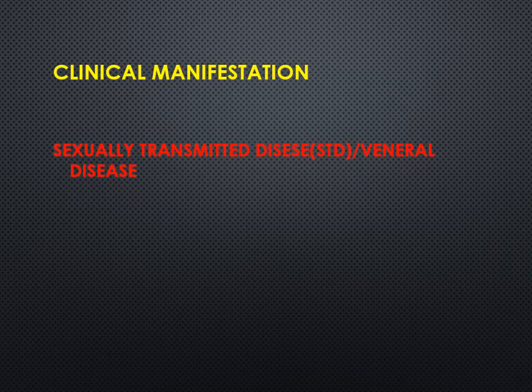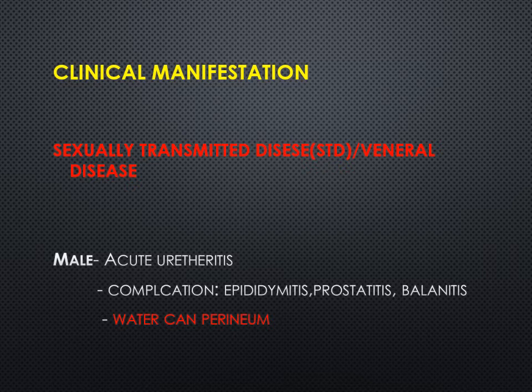Regarding clinical features in males: the most common presentation is acute urethritis with urethral discharge. The word 'gonorrhea' means 'flow of seed,' meaning the discharge will resemble semen — it is mucopurulent, which is very important. The incubation period is two to seven days. In untreated patients, complications include epididymitis, prostatitis, balanitis, and if infection spreads to periurethral tissue, abscess and sinus formation occur — a condition known as 'watering-can perineum.'